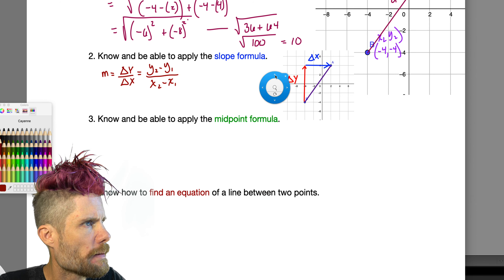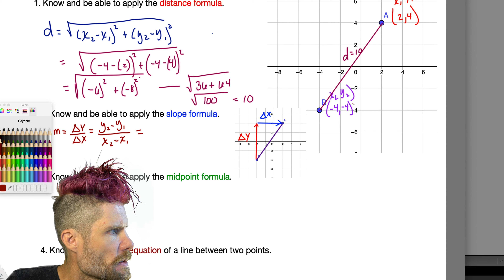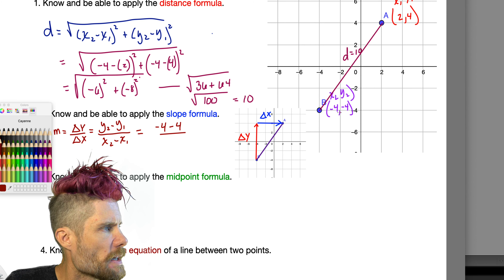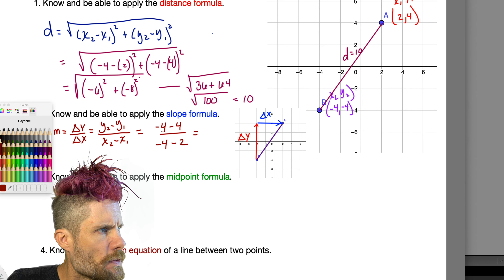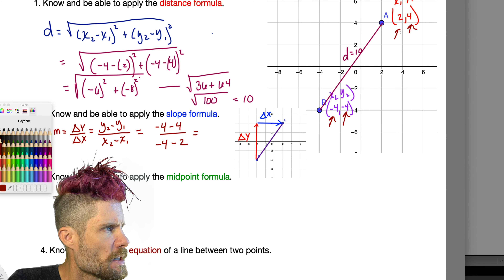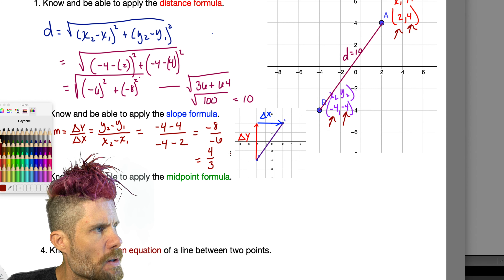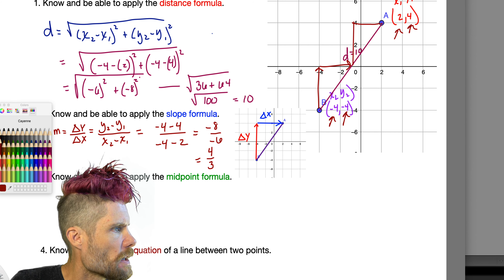Using the same two points: y2 is negative 4 minus y1 which is 4, over x2 which is negative 4 minus x1 which is 2. That gives negative 8 over negative 6. A negative over a negative is positive, and we simplify 8 over 6 by dividing both by 2, giving us 4 thirds. So I'm rising 4 and running 3 — the slope is 4/3.